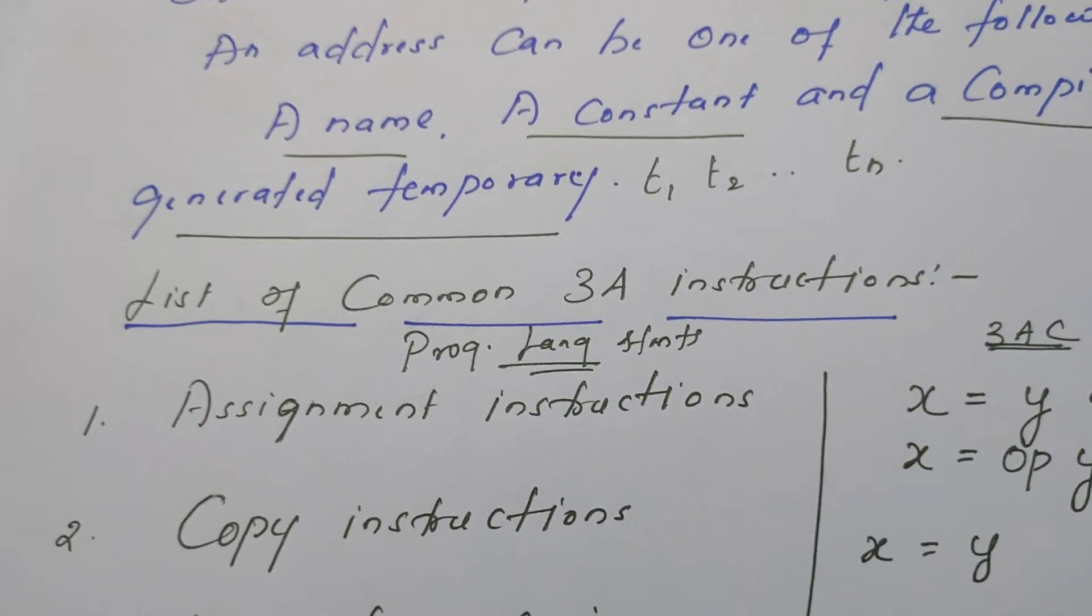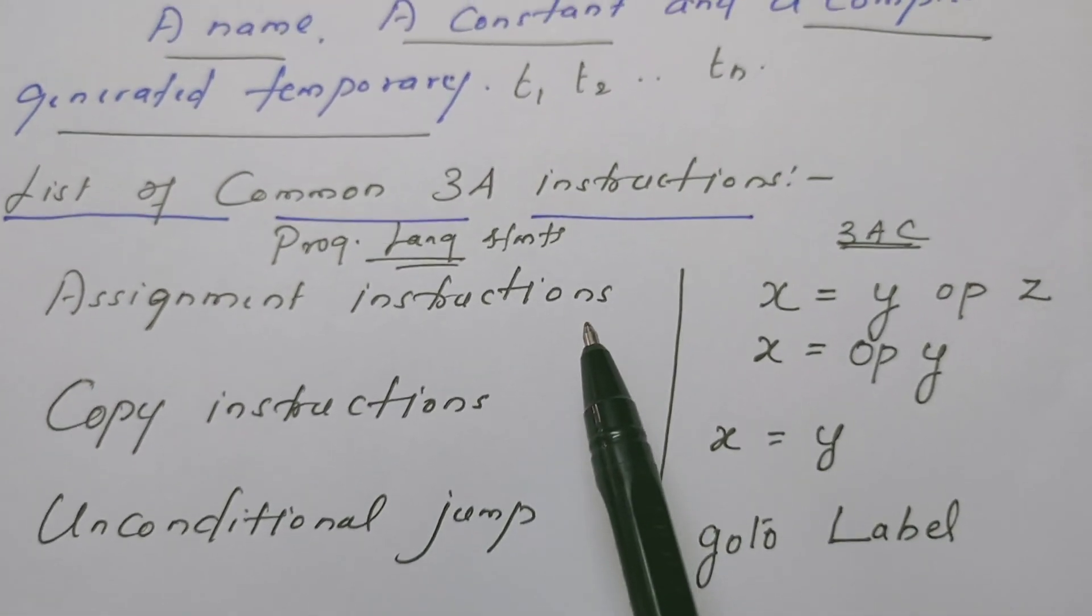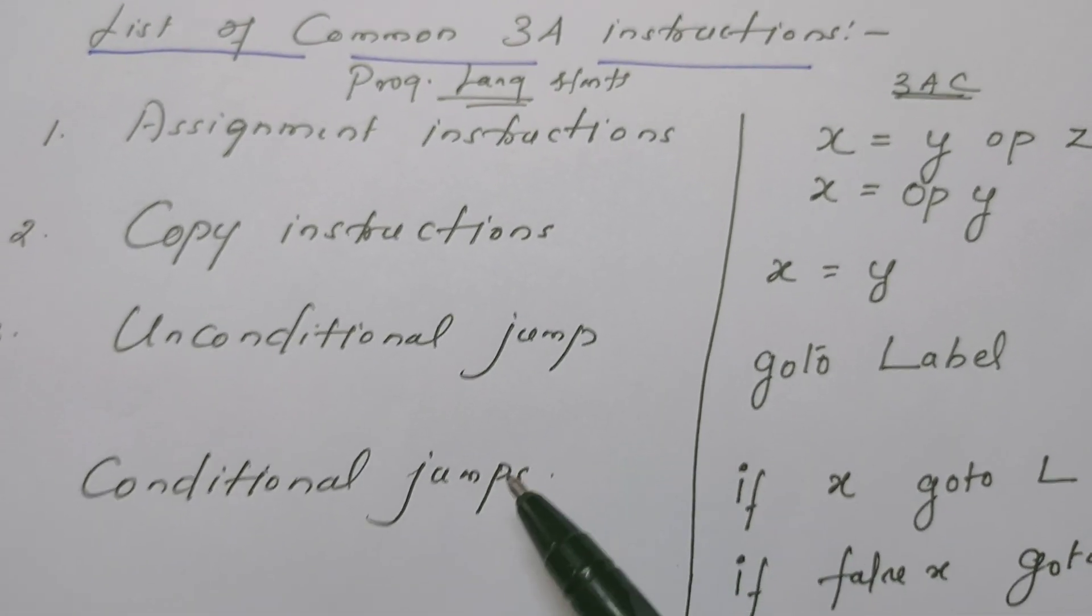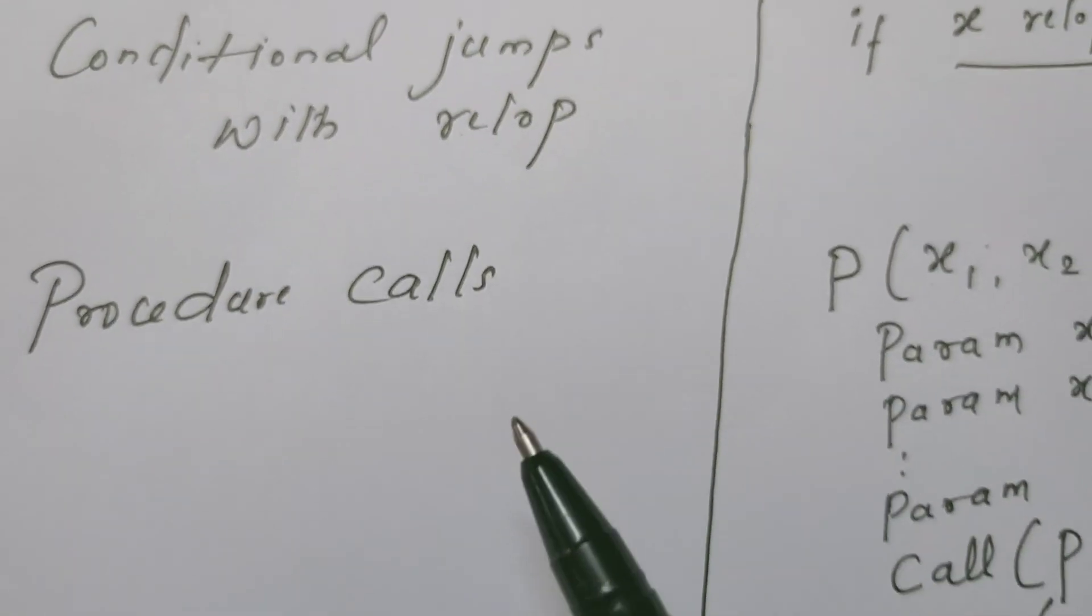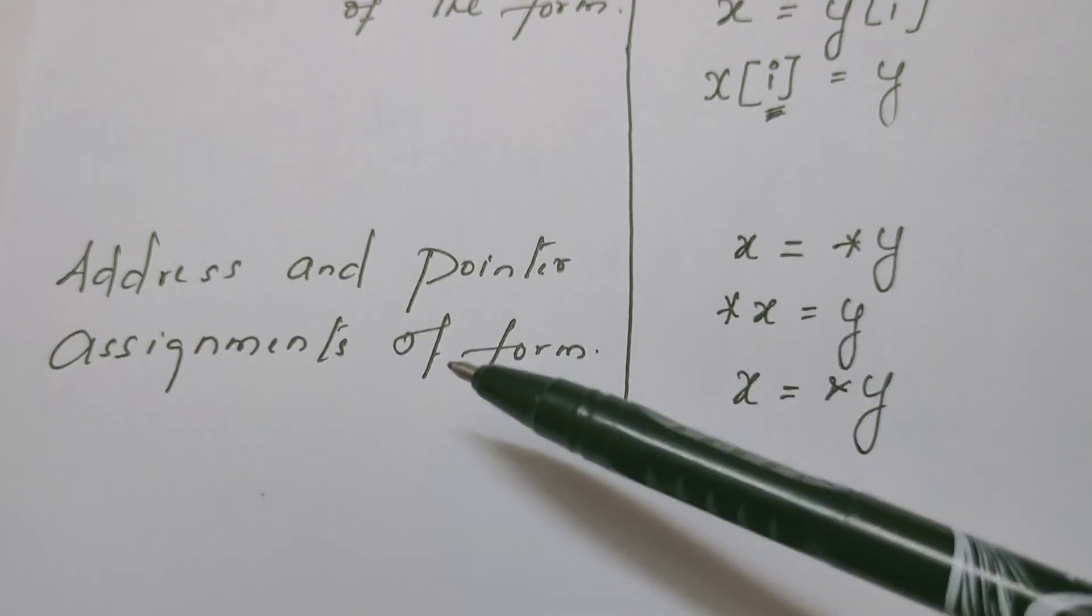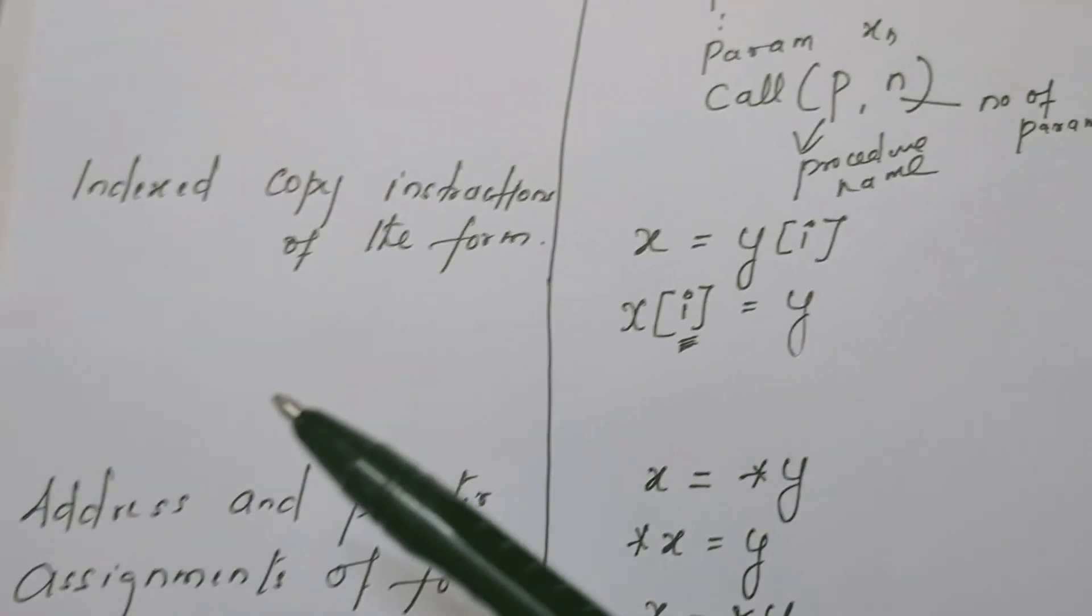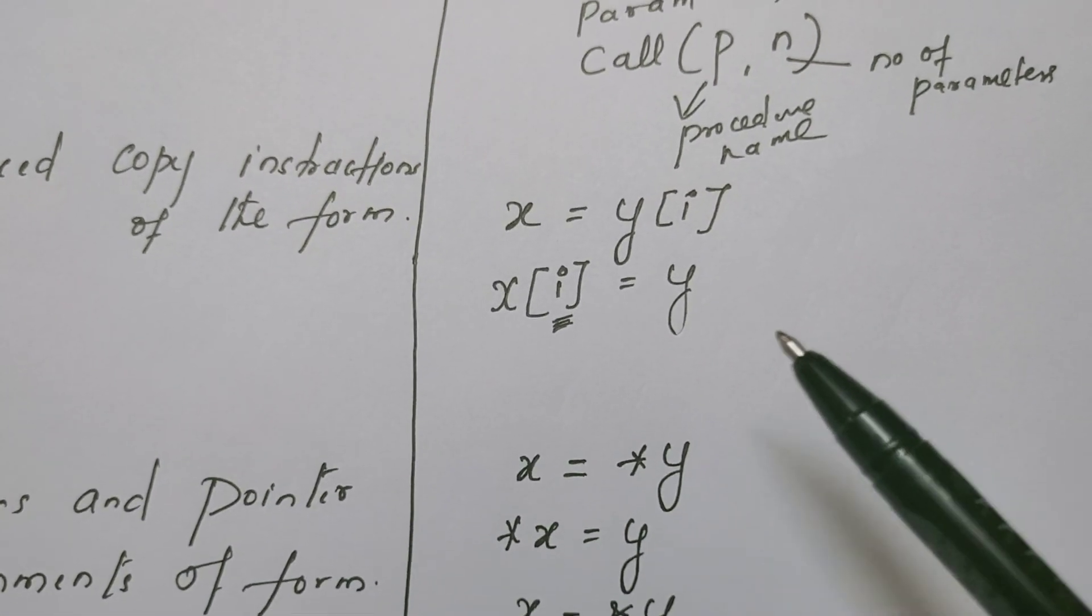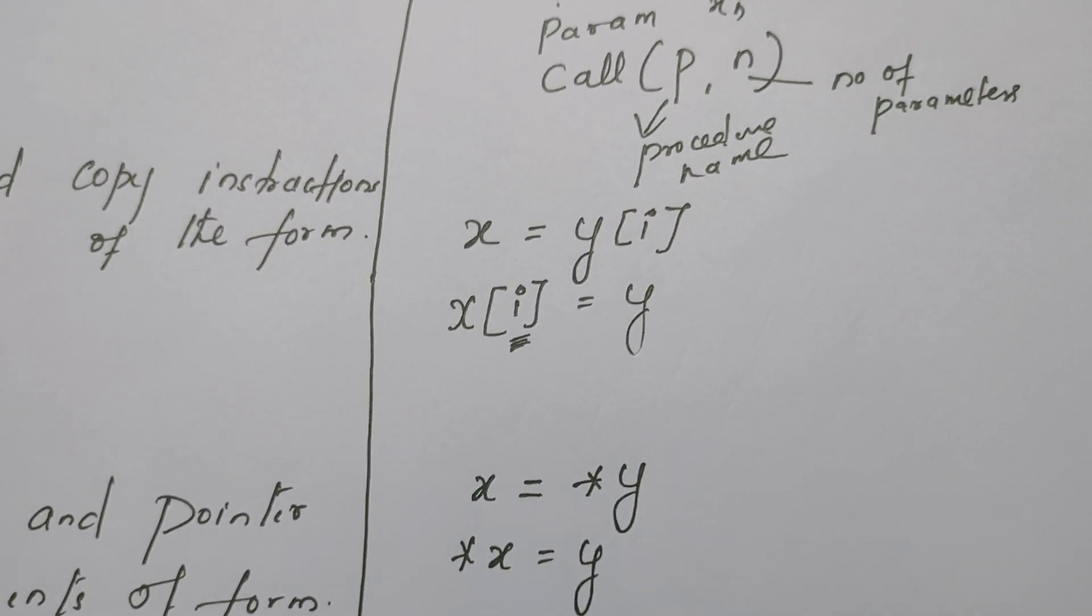Let us have a look once again. In a programming language, we may have assignment instruction, copy instruction, jumps and conditional jumps, procedure calls, indexed copy instructions, and address and pointer assignments. For all these programming language statements, we have seen equivalent three address code format. I hope you have understood this.